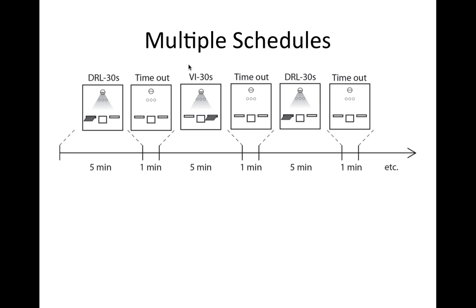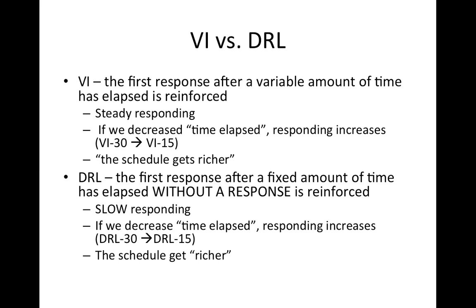In my own experiments, we're studying multiple schedule arrangements using a DRL — differential reinforcement of low rates — and a VI-30, where the discriminative stimuli are the lever placements: DRL-30 on the left lever and FI-30 on the right lever, in five-minute components with breaks between. The VI is a schedule where the first response after a variable amount of time is reinforced, producing steady responding.